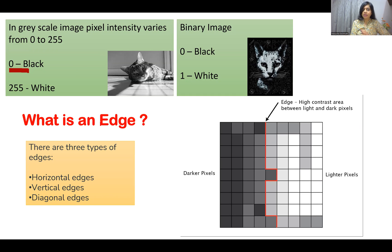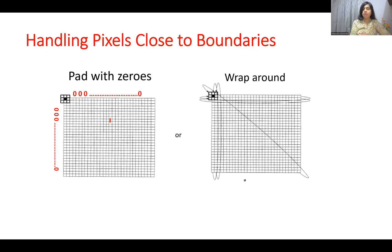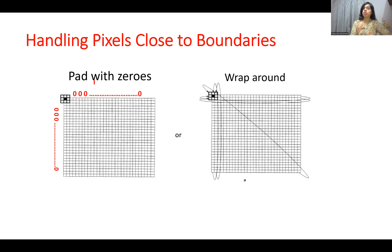There are three types of edges: horizontal edges, vertical edges, and diagonal edges. Now before using edge detection techniques there are prerequisites. We should either pad the image with zeros or use a wrap-around condition.